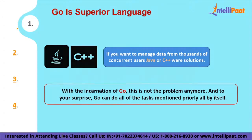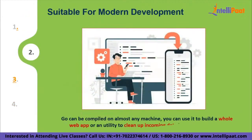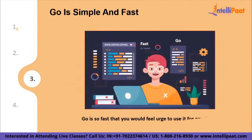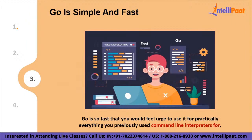Go has been developed with modern software development in mind. Not everything that is new is good, but when a programming language is developed for the exact environment that most of us are utilizing right now — scalable, cloud-based servers tuned for performance — a lot of things can go right. Because Go can be compiled on almost any machine, you can use it to build a whole web application or a utility to clean up compiled data before processing it. Like Perl before it, Go is a Swiss Army knife, but one that has stripped off all the overhead and extra junk that has accumulated onto programming platforms over the past few decades. Go is simple and lightning fast. You can learn Go in a few hours if you are already aware of the basics of programming.